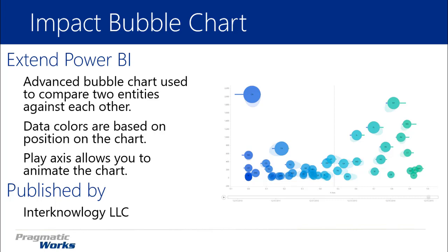The similarities are you're able to compare three different measures — and actually you can compare more than that. The three measures you can compare are your X and Y axes and also the size of the bubble. What's different is the bubble chart allows you to then have two additional measures that you can use for comparison.